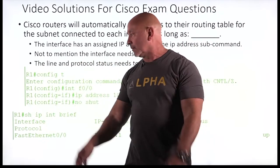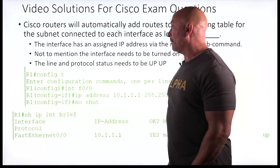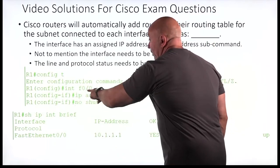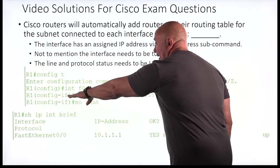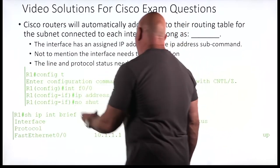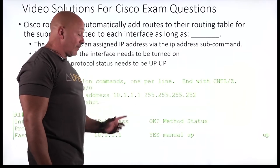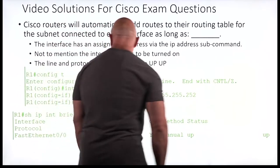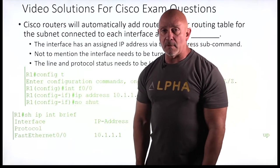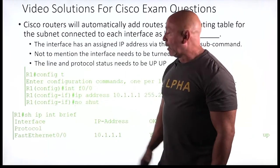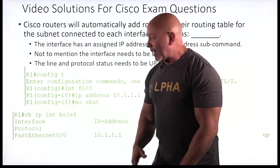Let's assign an IP address to a router. Interface configuration — I go inside F0/0, I'm in interface configuration mode, I go 'IP address' and put the actual IP address for that interface, then I do a 'no shut' — I turn on the interface, which is 'no shutdown'.